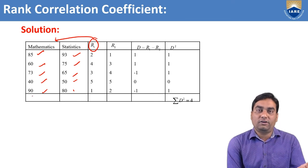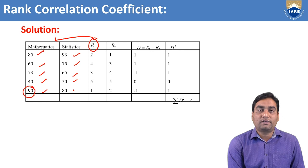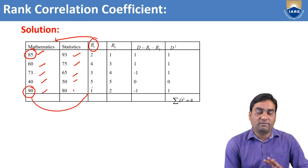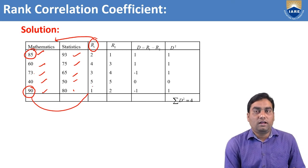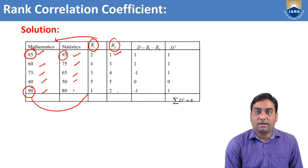We can allot the ranks either in decreasing or increasing order. Generally, we give ranks in decreasing order — whoever got the highest mark gets first rank. In mathematics: 90 marks gets first rank, 85 marks gets second rank, 73 marks gets third rank, 60 marks gets fourth rank, 40 marks gets fifth rank. Similarly for statistics ranks (R2): 93 marks gets first rank, 80 marks second rank, 75 marks third rank, 65 marks fourth rank, 50 marks fifth rank.